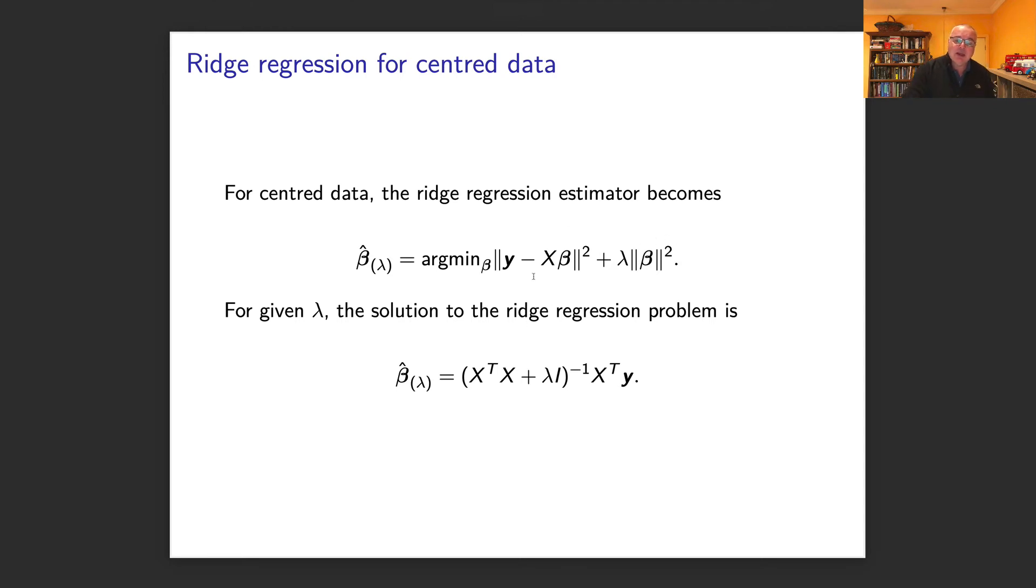In this particular scenario, the solution looks very similar. If you get rid of this term here, it's just (X'X)⁻¹X'y, so it's usual least squares plus this extra thing here, where I is just an identity matrix.